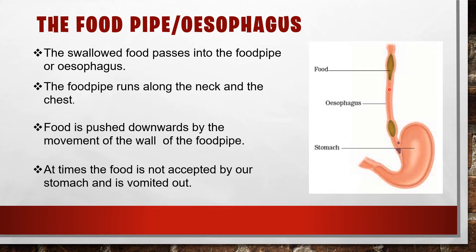The food pipe runs along the neck and the chest. The food from the buccal cavity passes through the food pipe and reaches the stomach because food is pushed downwards by the movement of the wall of the food pipe. This movement of the food pipe wall causes the food to come down and reach the stomach.